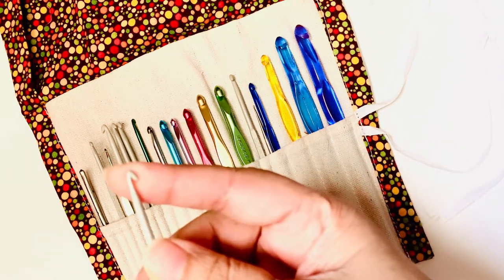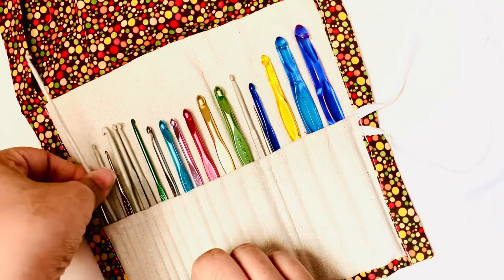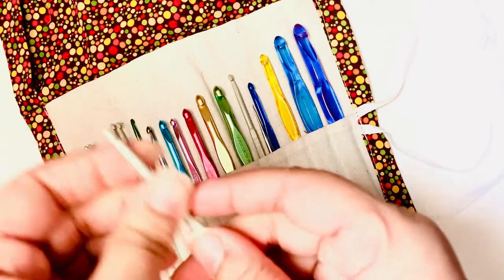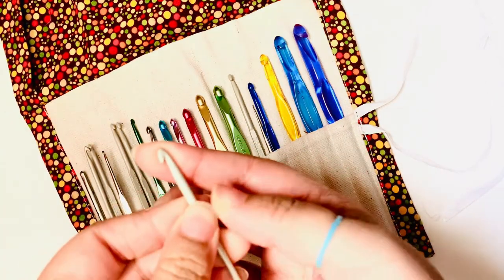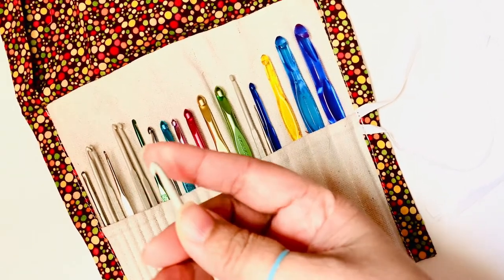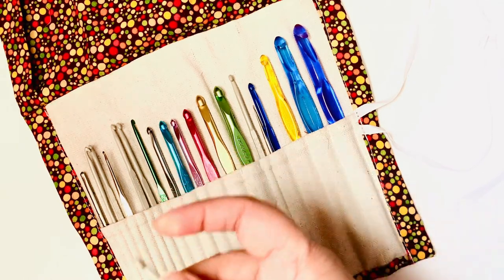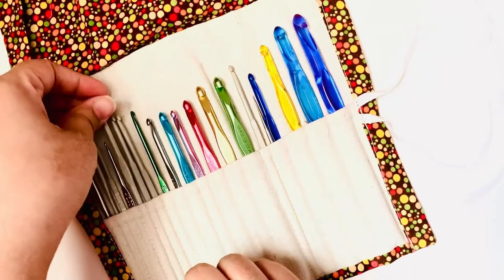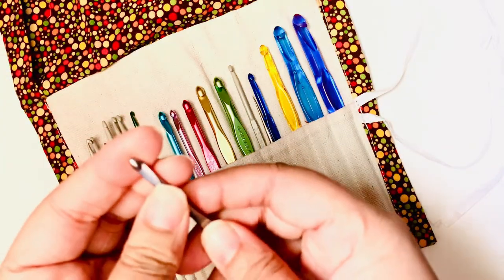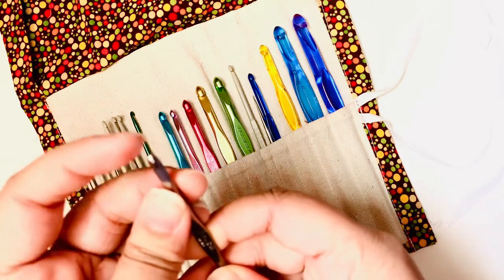Now here are some hooks that I found in America, and if you see the difference, they're not as pointy—they're a bit rounded. The very first ones that I found, like about ten or so years ago, these are Susan Bates.